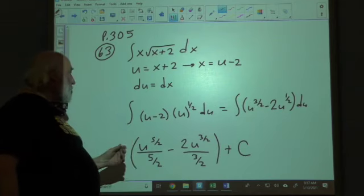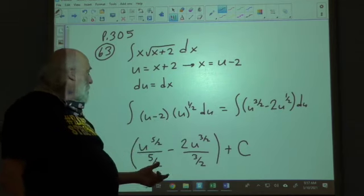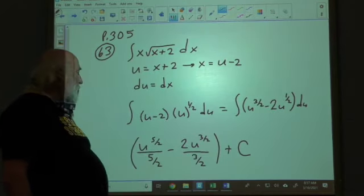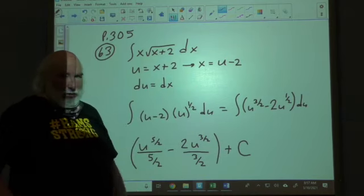Now, next what we're going to do here is we're going to distribute the u to the 1 half power across both of these. And this gives us the u to the 3 halves minus 2u to the 1 half. And we still have the du that is going to multiply both of these in theory.